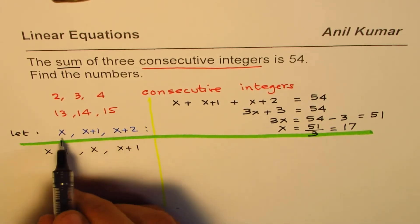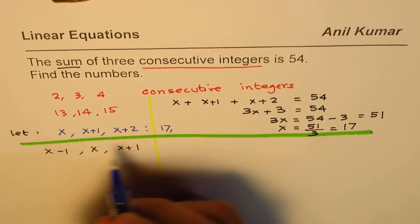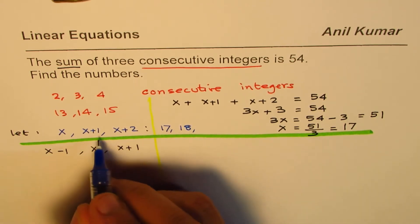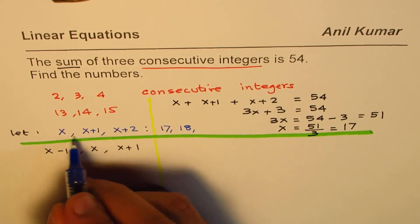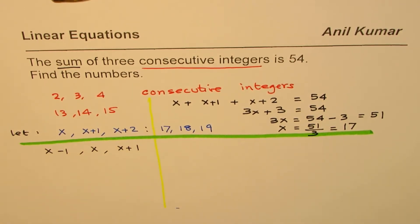Now, if x is 17, what are the three numbers? We can write them down as 17. The next number is 17 plus 1, which is 18. And then it is 18 plus 1 or 17 plus 2, which is 19. So, that is the solution for us.